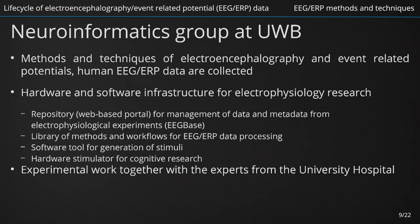Before we get to the core of this tutorial — EEG data life cycle — we shortly introduce the neuroinformatics group at the University of West Bohemia in the Czech Republic. Operation of electrophysiological laboratory, design and performance of electrophysiological experiments, collection, storage, management and sharing of experimental data and metadata, analysis and interpretation of these data, and final publication of results are time-consuming activities that need to be well organized and supported by suitable infrastructure. The neuroinformatics group focuses on research of brain electrical activity using methods and techniques of EEG and ERP, and our group develops, integrates and maintains a software and hardware infrastructure for electrophysiology research, including a repository for managing experimental data and metadata called EEG-based, library of methods and workflows for EEG and ERP signal processing, software tools for stimuli generation, and hardware devices such as EEG caps. Experimental work of the group is usually performed together with experts from the University Hospital in Pilsen.